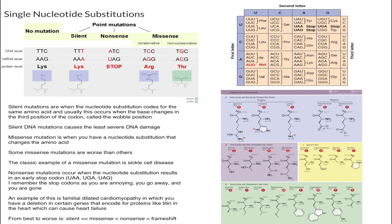The classic example of a missense mutation is sickle cell disease. In sickle cell disease, glutamic acid — which is negatively charged — is replaced by valine, which is hydrophobic. So you go from a negatively charged molecule to a hydrophobic one. In humans, this messes up the beta globin gene in red blood cells and makes it easier for red blood cells to burst.